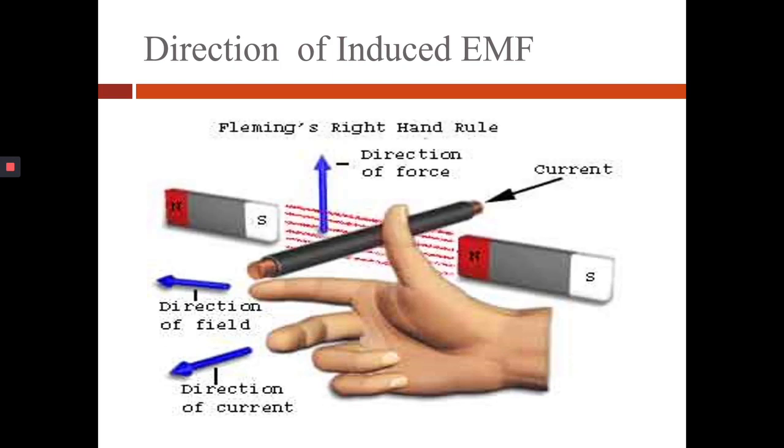Now we will see direction of induced EMF. This is given by Fleming's right hand rule. The Fleming's right hand rule states that when we place our middle finger, first finger and thumb at right angles to each other, then the middle finger indicates the direction of current, the first finger indicates the direction of field, and the thumb indicates the direction of force.